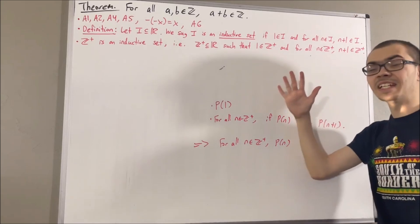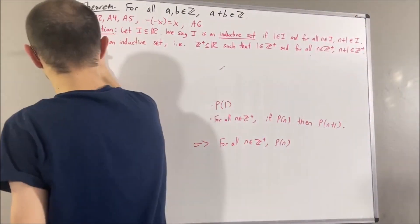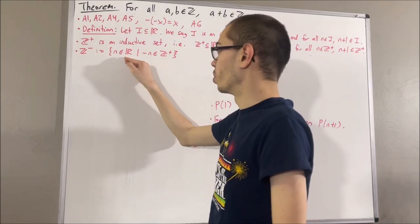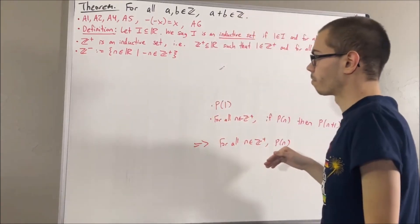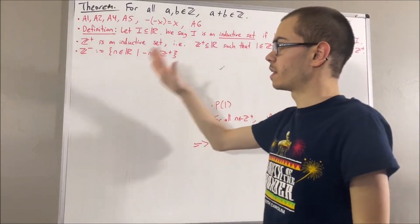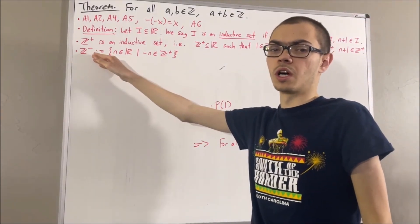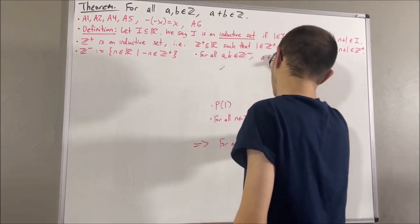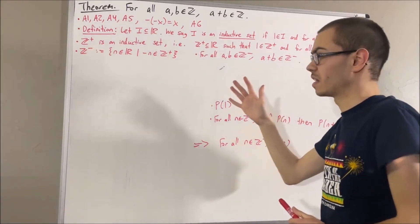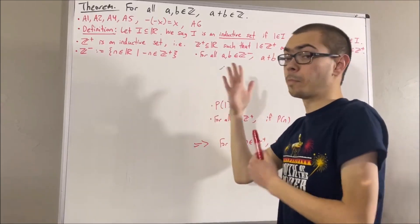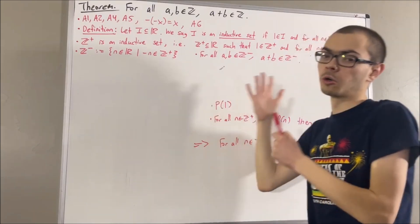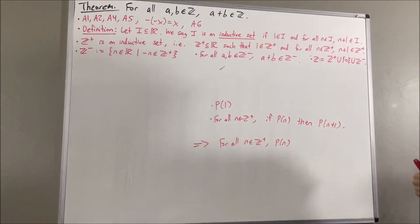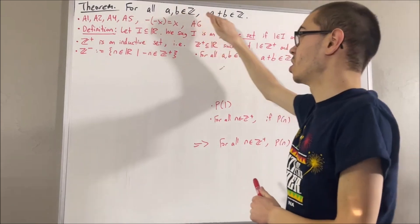Next, we defined the negative integers as follows: the set of negative integers is the set of real numbers n with the property that negative n is a positive integer. We've proven that the negative integers are closed under addition — so for all negative integers a and b, a plus b is a negative integer. We also defined the integers as the set of real numbers which are positive integers, negative integers, or 0 — pretty much just the union of these three sets.